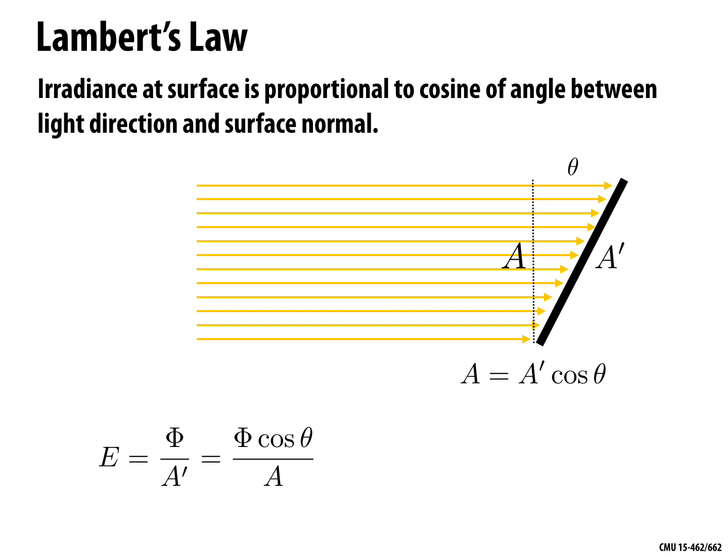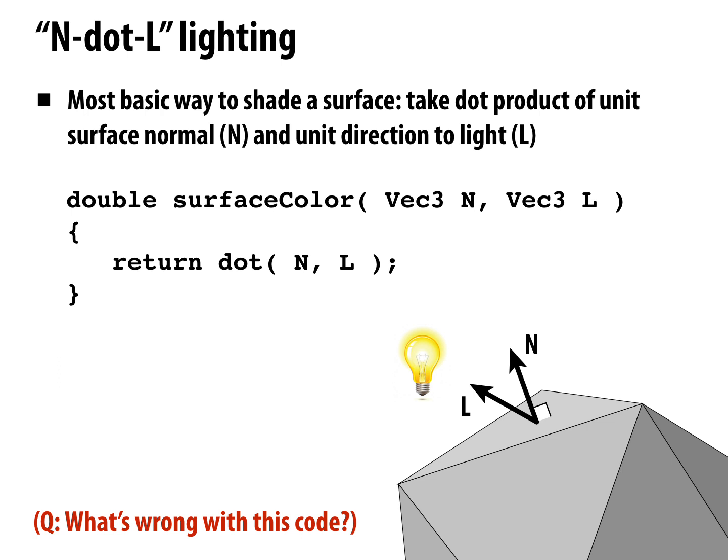The more we tilt the surface away from the beam of light, the smaller the irradiance becomes. That's very intuitive: we have the same total number of photons, the same radiant flux, but now distributed over a larger area. The photons get smeared out over a bigger area, so things are darker or colder. This gives us the most basic way to shade a surface in computer graphics: at a point on a triangle, grab its unit normal n and the direction l to the light, and compute n dot l, which equals cosine of the angle between them.